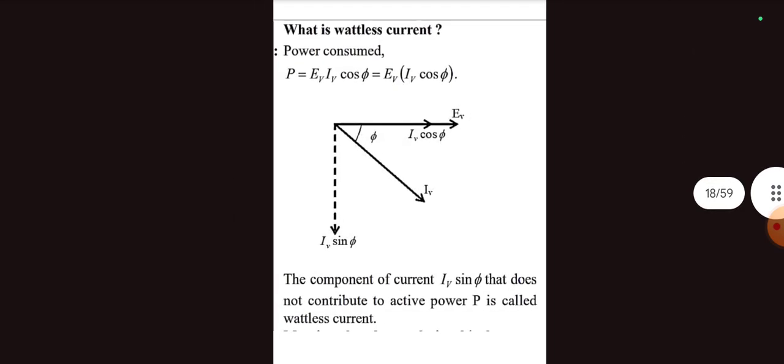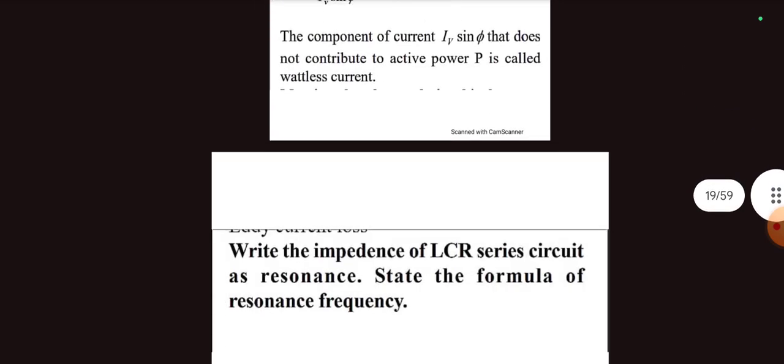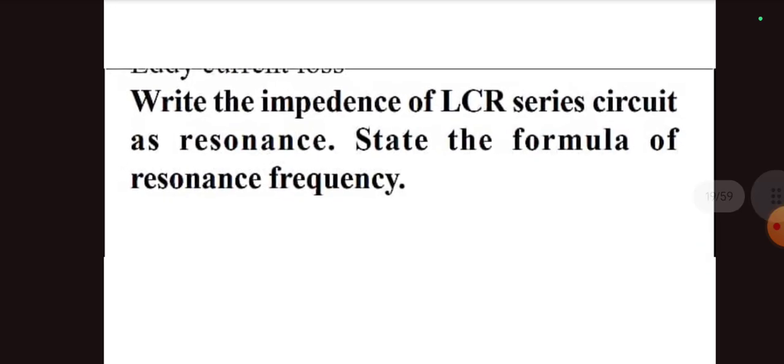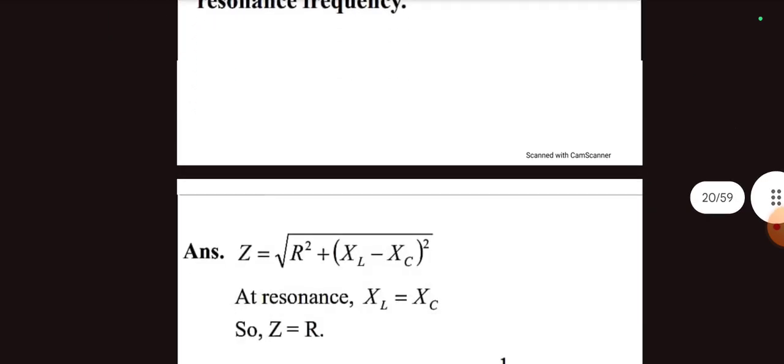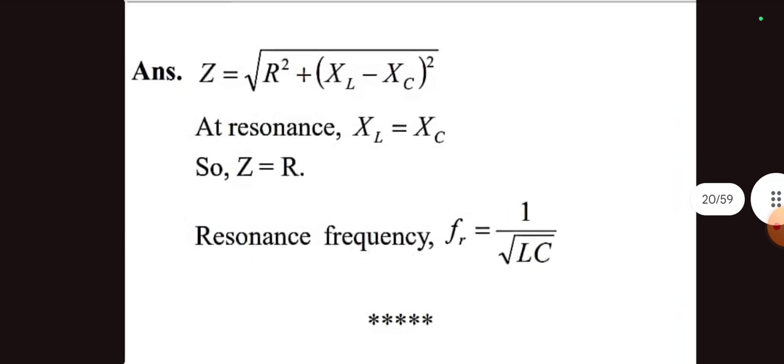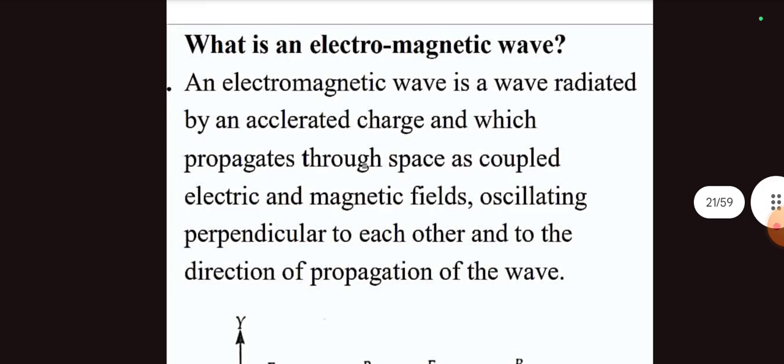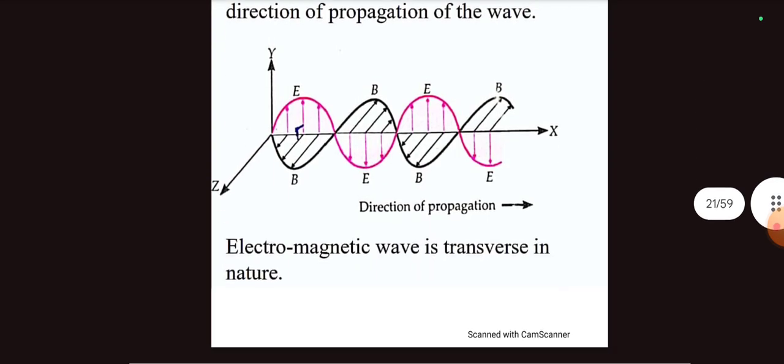What is wattless current? Write the impedance of the circuit at resonance. State formula of resonance frequency. Write three mark. What is the energy of electromagnetic wave? State the property of electromagnetic wave, the answer input and which property will be key.